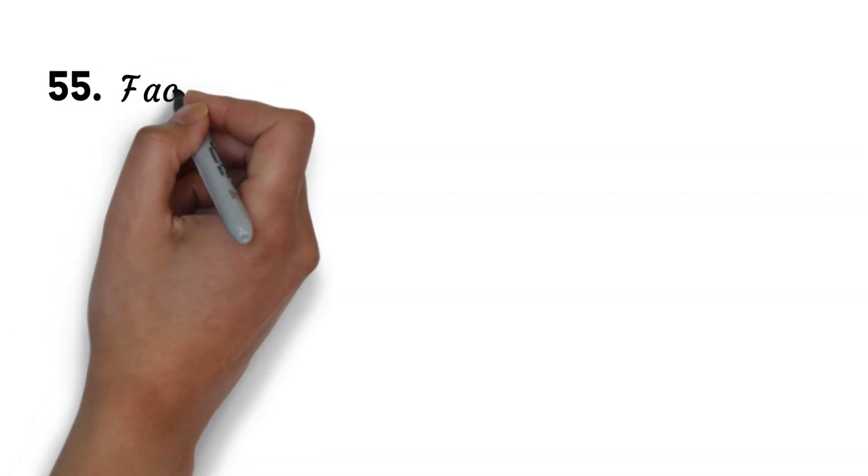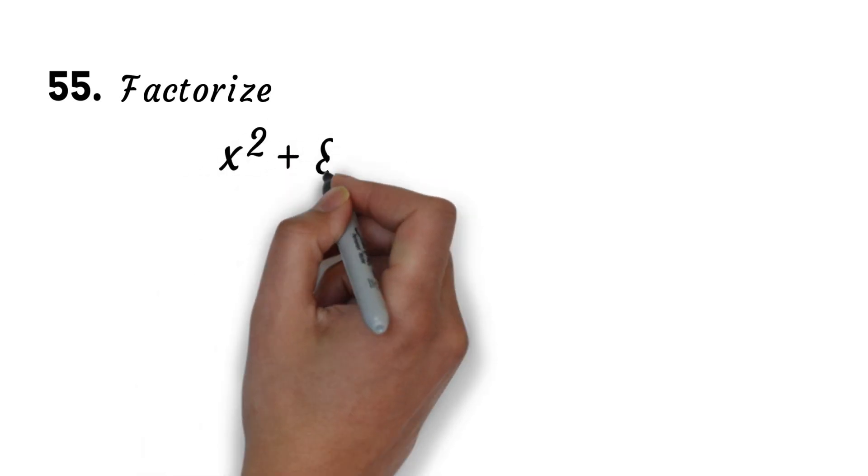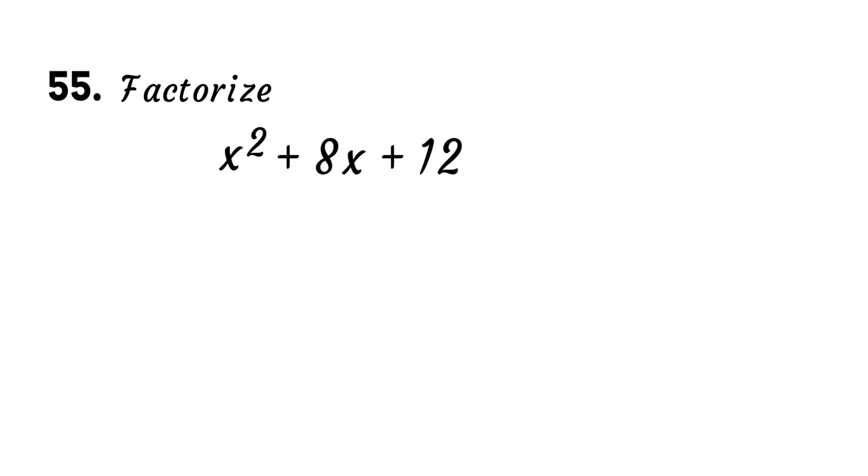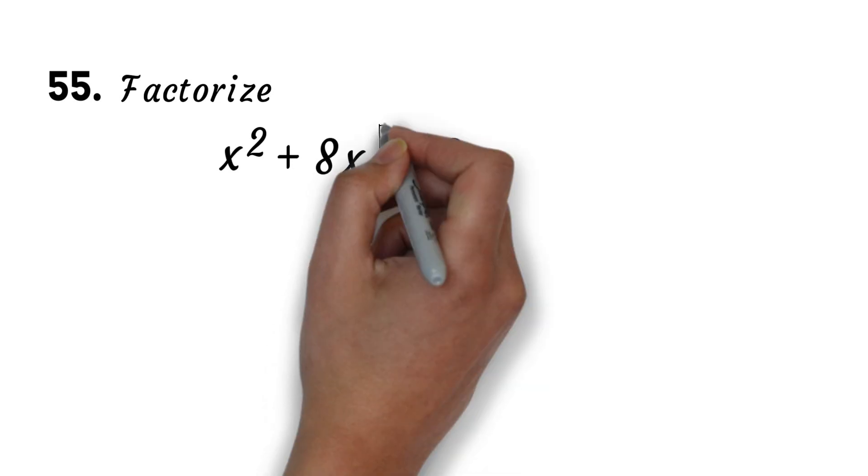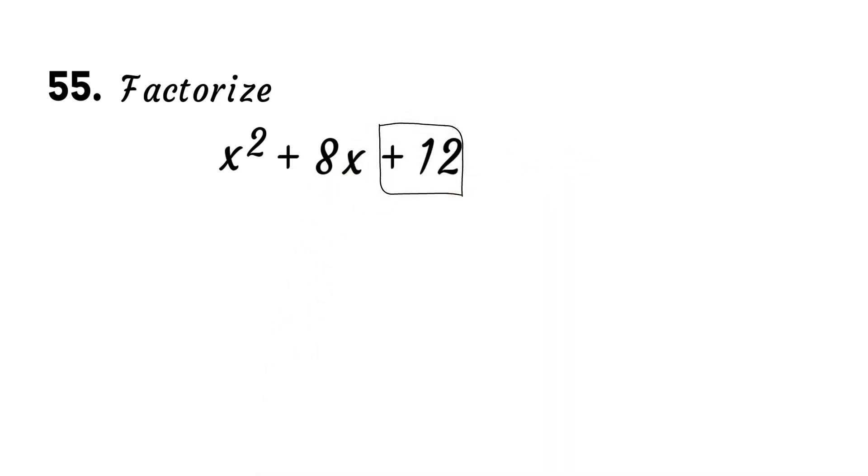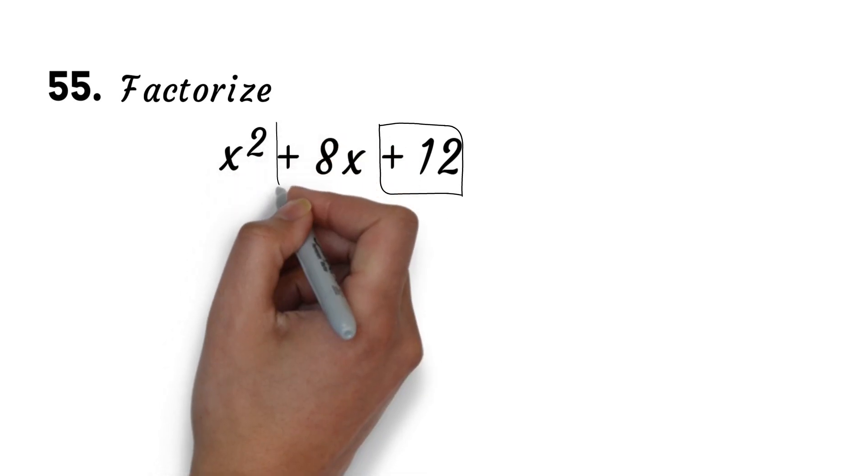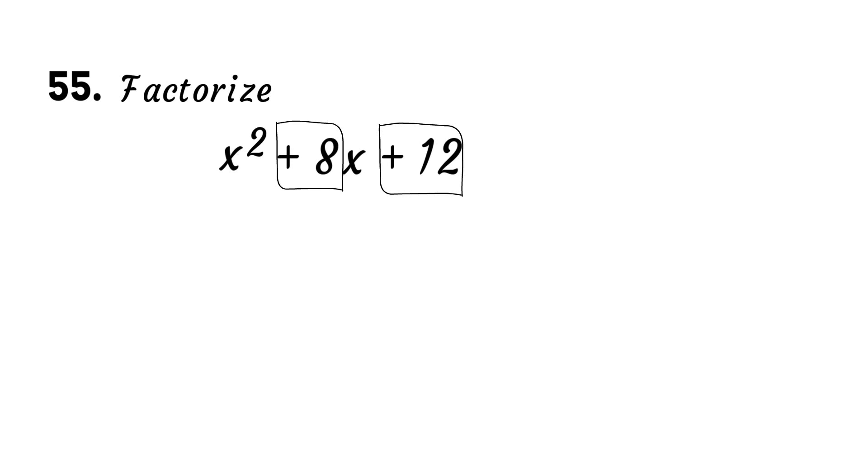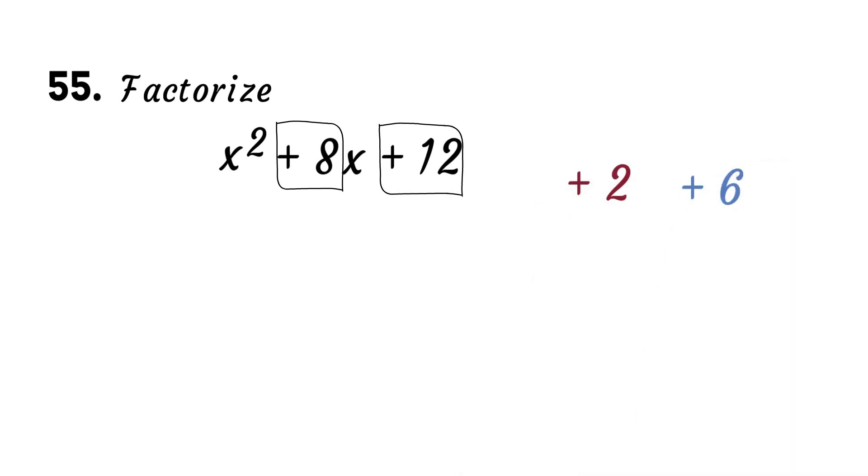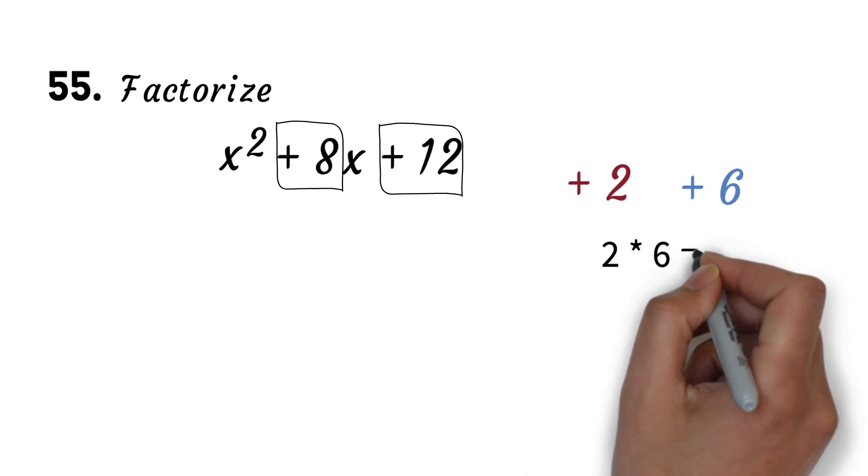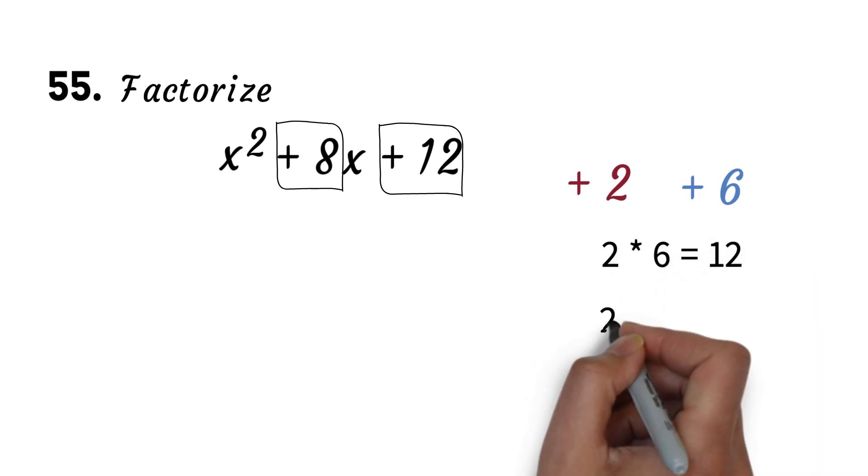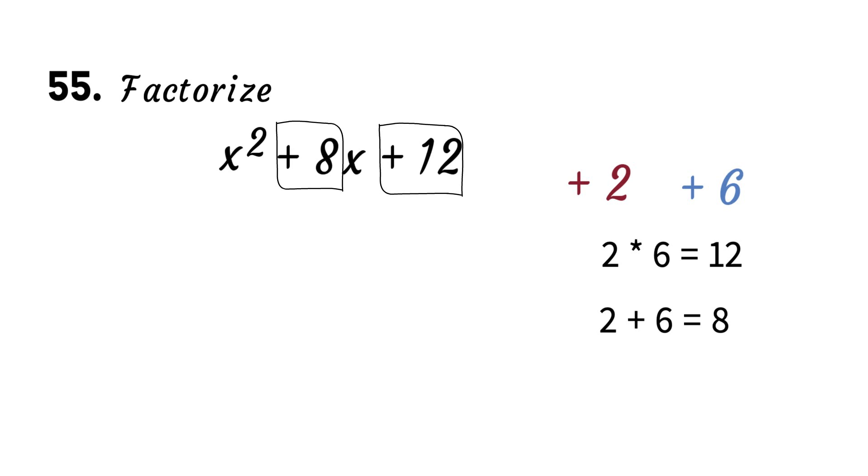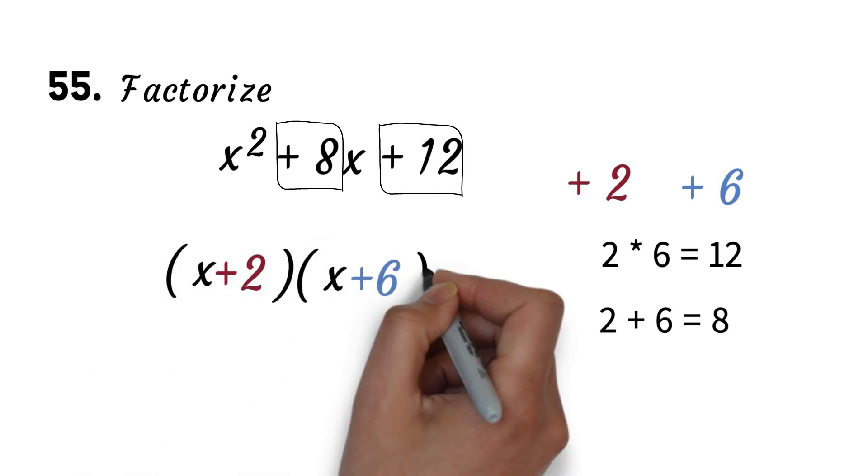Question 55 is similar. We want to factorize x² plus 8x plus 12. We will find two numbers that multiply to get the constant 12. The two numbers must also add to get the coefficient of the x, which is 8 here. The two numbers will be 2 and 6. 2 times 6 is 12, and 2 plus 6 is 8. So we will have (x plus 2) and (x plus 6) as our final answer.